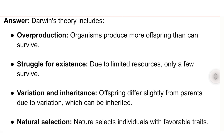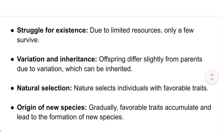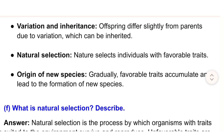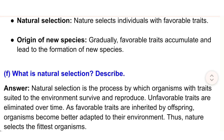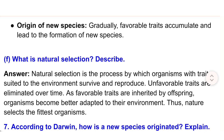Struggle for existence — due to limited resources, only a few survive. Variation and inheritance — offspring differ slightly from parents due to variation, which can be inherited. Natural selection — nature selects individuals with favorable traits. Origin of new species — gradually, favorable traits accumulate and lead to the formation of new species.